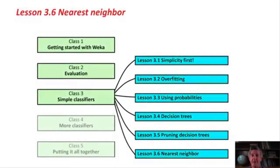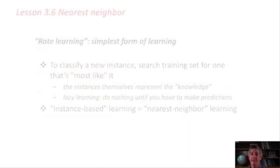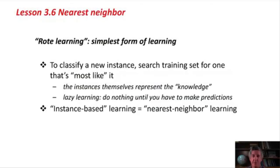We're going to talk here in the last lesson of Class 3 about another machine learning method called the Nearest Neighbor or Instance-Based Machine Learning Method. When people talk about rote learning, they just talk about remembering stuff without really thinking about it. It's the simplest kind of learning. Nearest Neighbor implements rote learning. It just remembers the training instances. To classify a new instance, it searches the training set for one that's most like the new instance. The representation of the knowledge here is just a set of instances. It's a kind of lazy learning. The learner does nothing until it has to do some predictions.